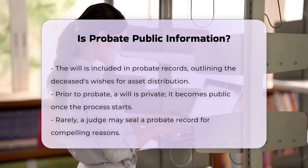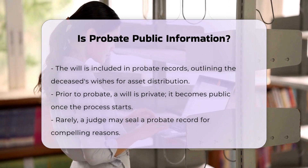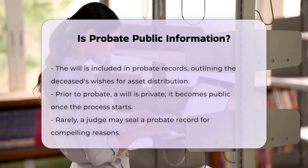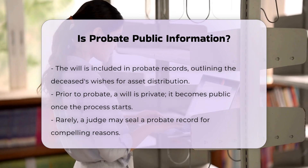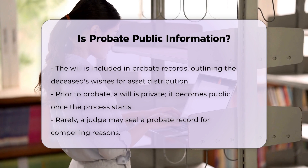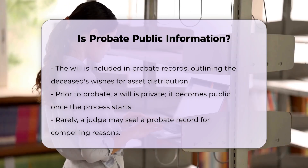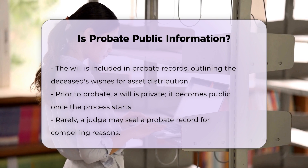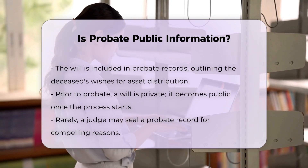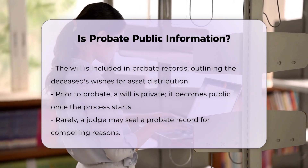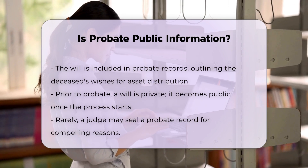What is included in probate records? Probate records contain detailed information about the deceased, including their assets, debts, and the identities of beneficiaries and creditors. They also include the will, which outlines the distribution of the estate according to the deceased person's wishes. Additional documents may include complaints, discovery requests, and transcripts of depositions or hearings if the will is contested.